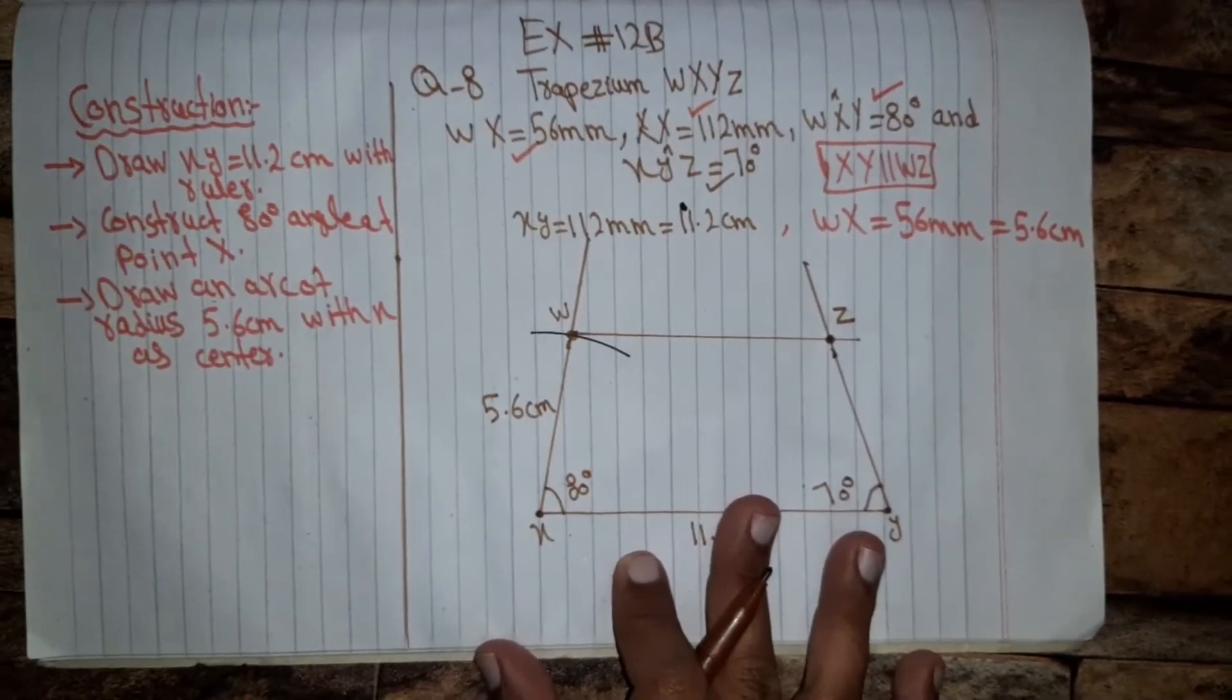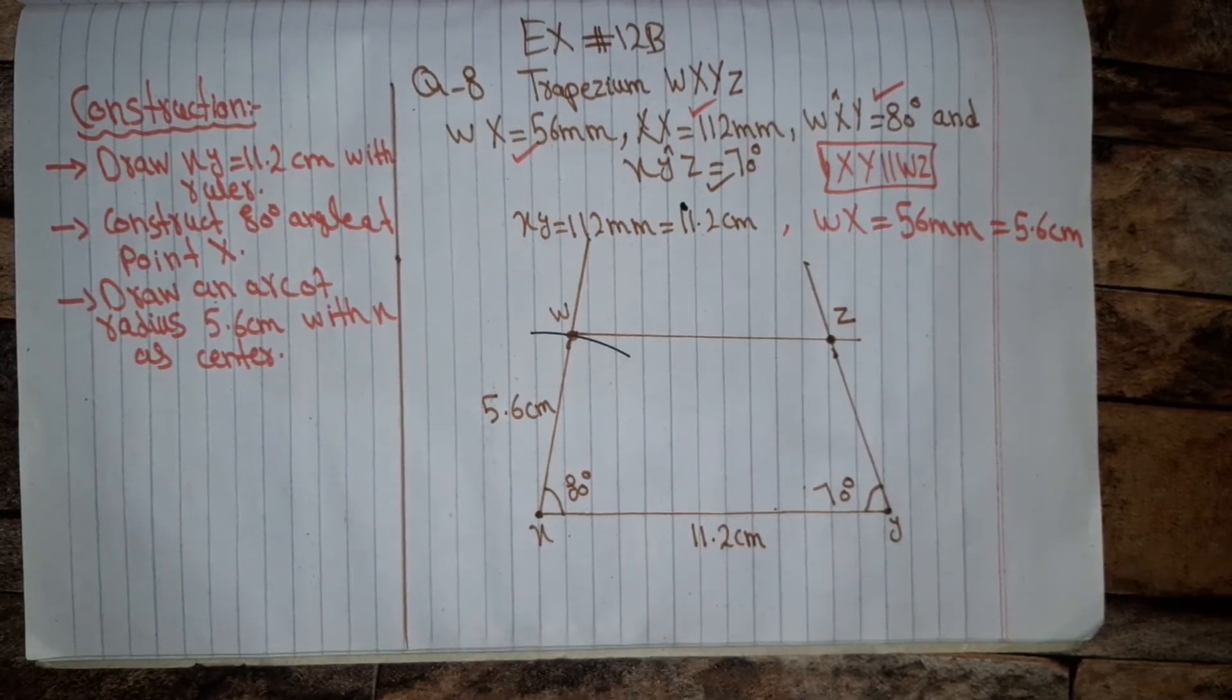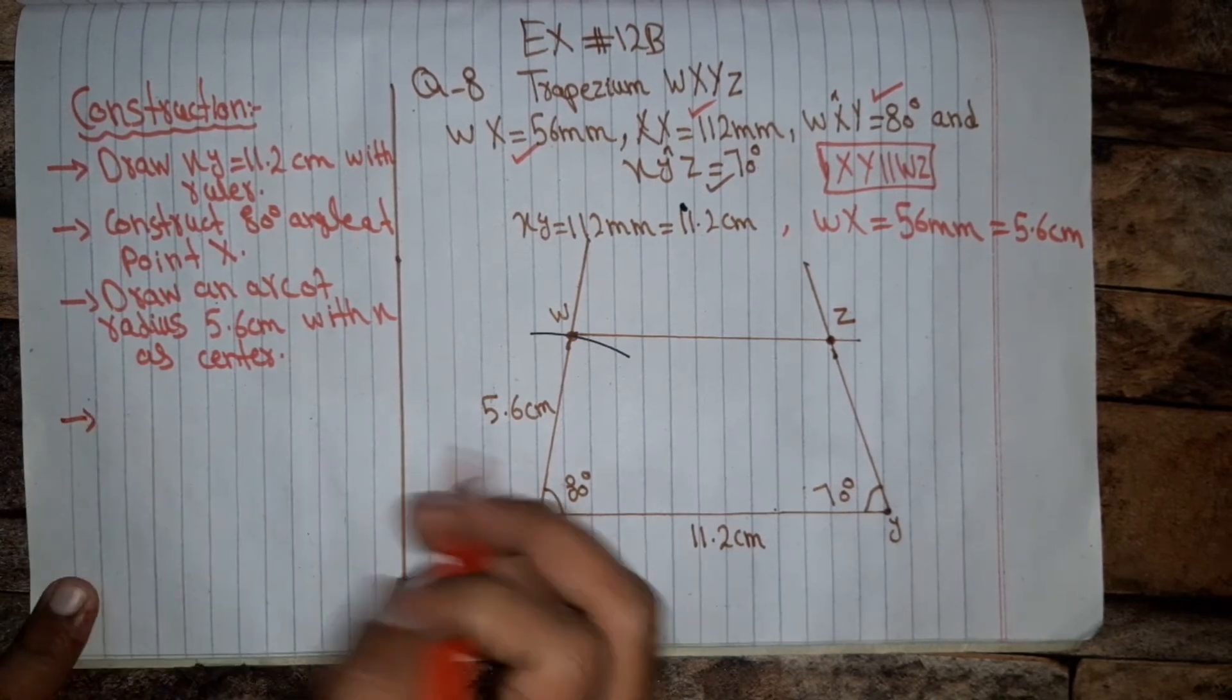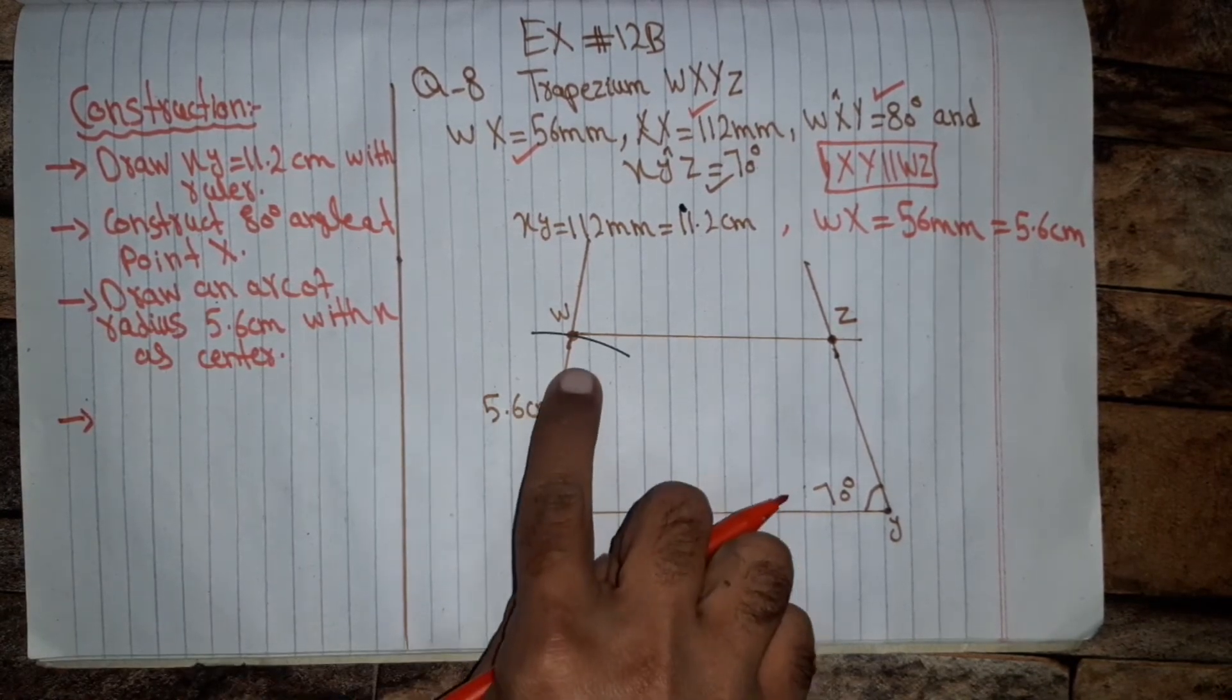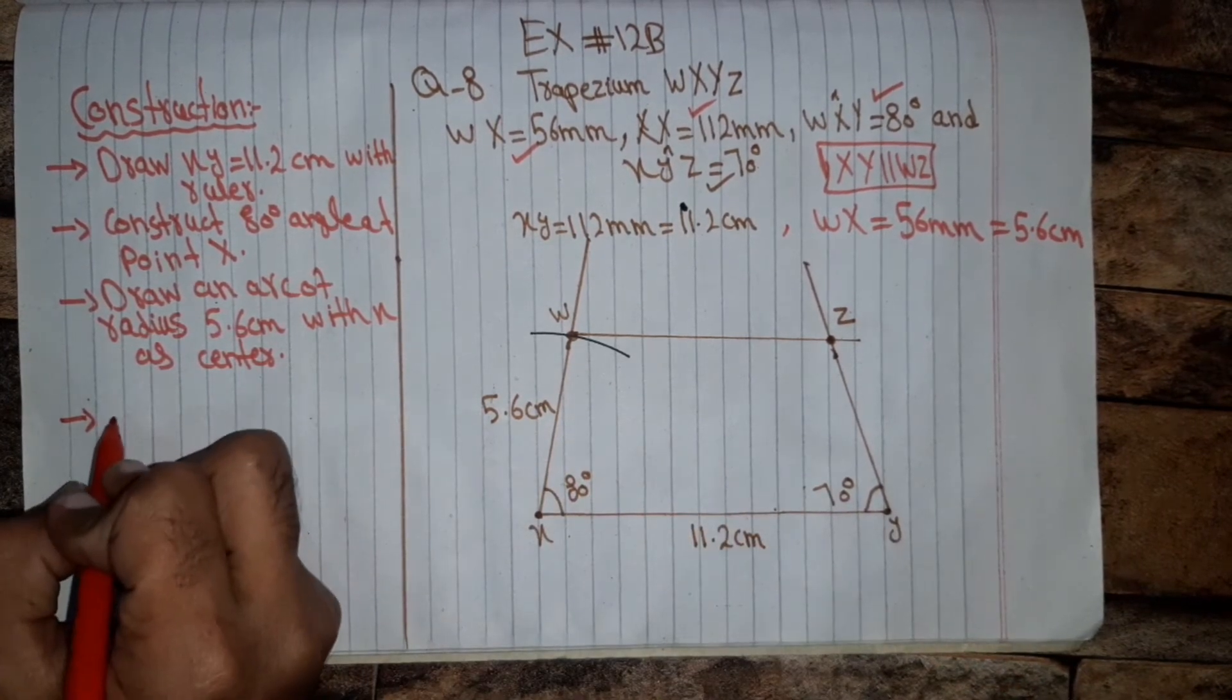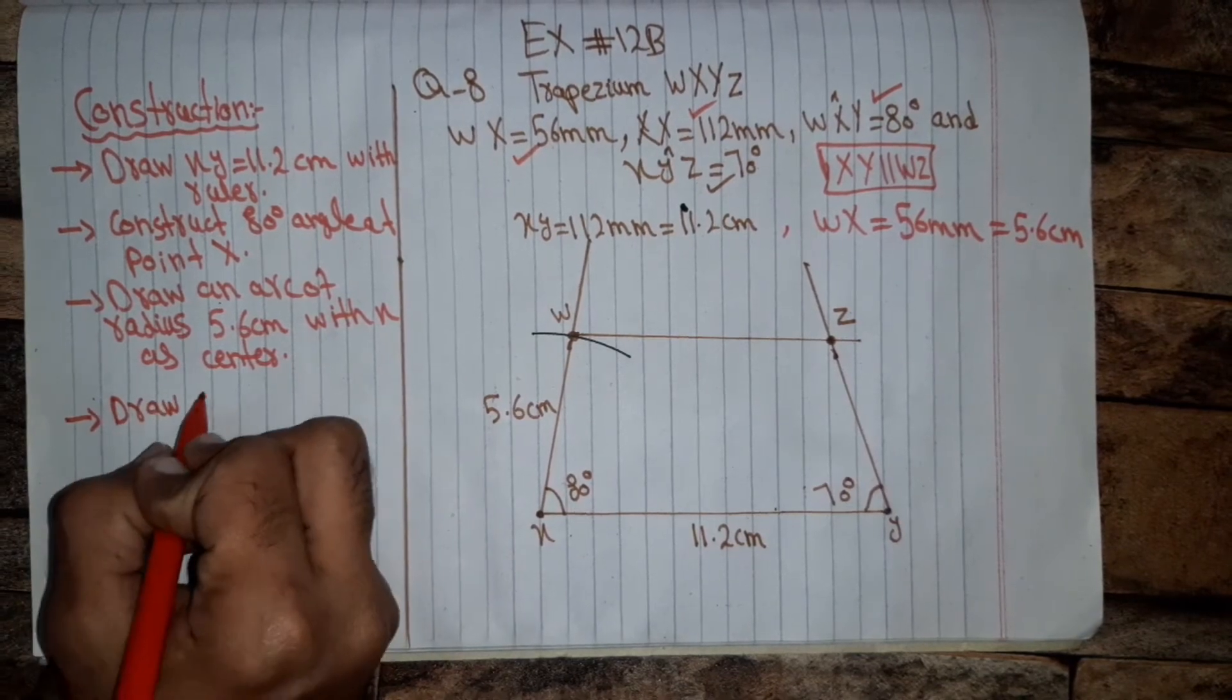So here we write steps for construction. Here we draw an arc 5.6 centimeters, and after that we draw straight line.